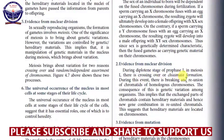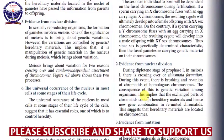During this event, there is a breaking and a reunion of chromatids of homologous chromosomes. The consequence of this is genetic variation among organisms. When the chromosomes break and rejoin, they lead to variation in organisms. This implies that the exchanged parts of chromatids contain hereditary material and hence produce new gene combinations in the reunited chromatids. Genetic variation occurs because the exchanged chromatids contained the genetic material, and hence the new gene combination in the reunited chromatids.